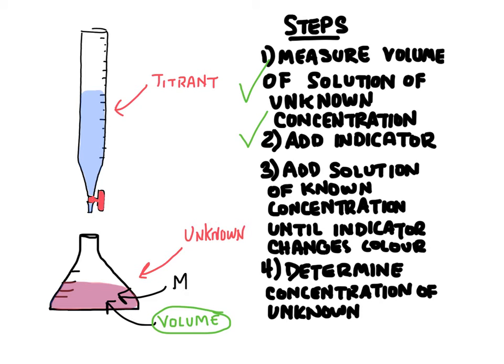Something that's going to change color when we've reached the equivalence point. Then we can start adding the titrant. And the titrant in this case will be the base because we have acid down here, so we're going to add a base. Now the base, we must know both the concentration and also the volume that we've added into this unknown solution in order to raise the pH to the equivalence point.